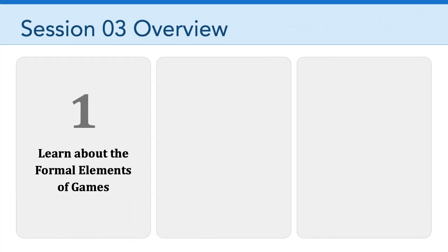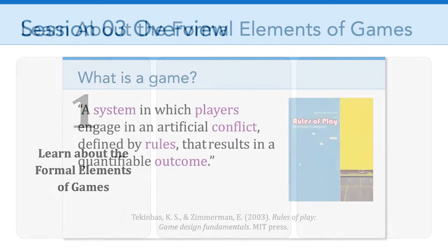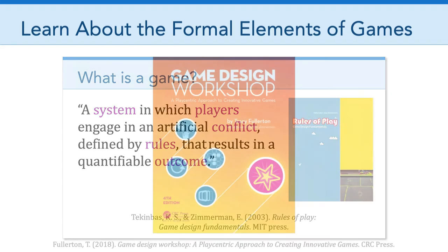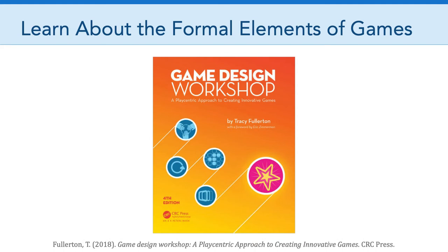The first of those things is to learn about the formal elements of games. To do that, we're going to build on our answer to the question, what is a game? We've been learning that one definition of a game is a system in which players engage in an artificial conflict defined by rules that results in a quantifiable outcome. We're going to build on that definition by introducing a new author, Tracy Fullerton, and specifically her book, Game Design Workshop.